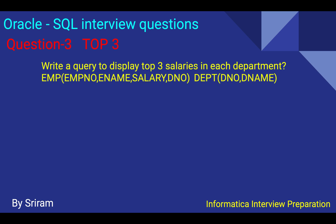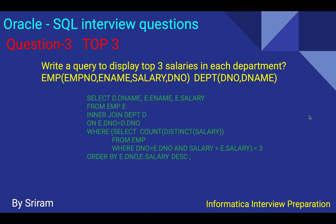The third question is related to the second one but slightly different. Here you have to display the top three salaries for each department across two different tables. A query using partitioning or subqueries can work to display the top three salaries for each department.